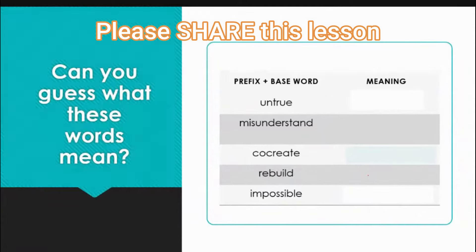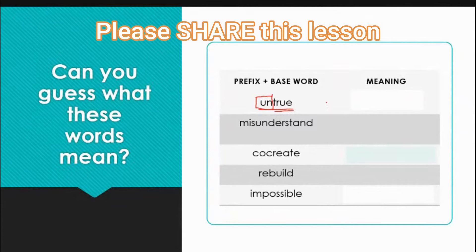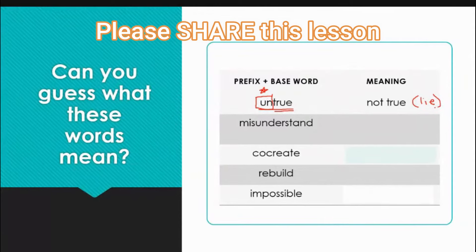Now that we've done some together, let's see if you can guess. Maybe say out loud what you think these words mean. Let's start with 'untrue.' We have our prefix 'un' and our base word 'true.' What could that mean? Untrue means not true — 'un' means not, so not true. For example, another word we might use is 'lie.' If someone said today is Monday, well, that's untrue. Not true.